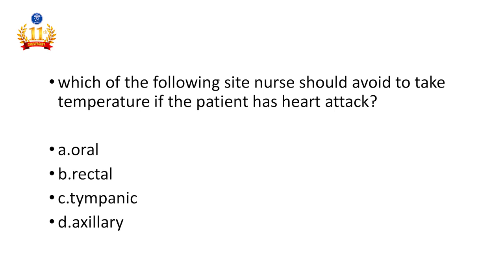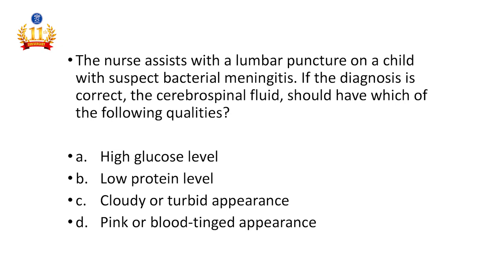Eighth question: Which of the following sites should the nurse avoid when taking temperature if the patient has had a heart attack? Oral, rectal, tympanic, or axillary. The answer is rectal. Rectal temperature should mainly be avoided in patients with cardiac disorders, as it can cause cardiac arrhythmias and even heart attack due to vagus nerve stimulation. We always need to avoid rectal temperature in patients with cardiac failure or cardiac-related problems.